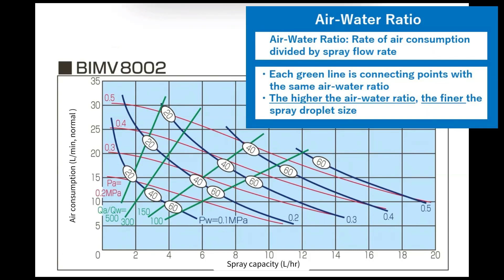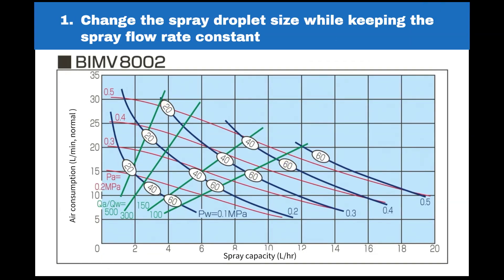The higher the air-water ratio, the finer the spray droplet size becomes. When the air-water ratio is around 100, the spray droplet size is 60 micrometers, and when the ratio is around 500, the spray droplet size is 20 micrometers. Now that you've learned how to interpret our flow rate diagram, let's move on to adjusting the spray based on the diagram.